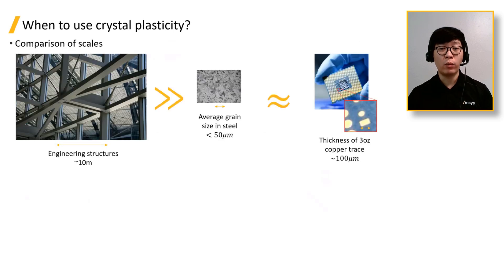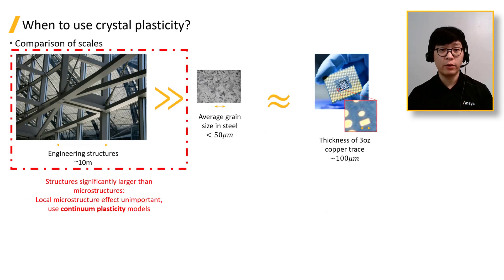Now, when should we consider using a crystal plasticity model? Let's look at a comparison of scales. If we're dealing with engineering structures that are significantly larger than the microstructure, then local microstructure effects are unimportant, and we can use continuum plasticity models like bilinear isotropic hardening.